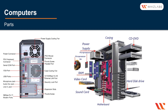Looking at the tower more closely, you can see the main components: a CD/DVD drive or writer, a floppy or card reader, and hard disks which can be a hard drive or SSD. The motherboard holds all the components together — RAM, video card, sound card, processor, and chipset. The power supply unit provides power to all these components, and everything is enclosed in a case.